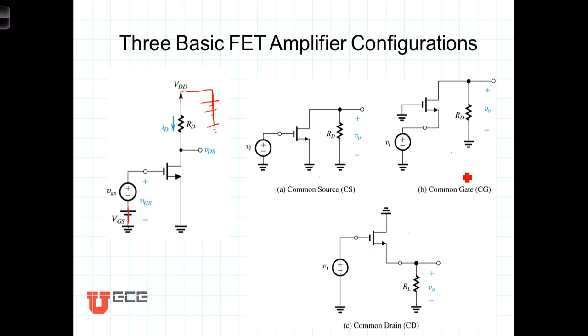This configuration, known as the common gate, arises from shorting the gate or tying the gate to ground. The input signal is applied to the source, and once again the output is taken at the drain.